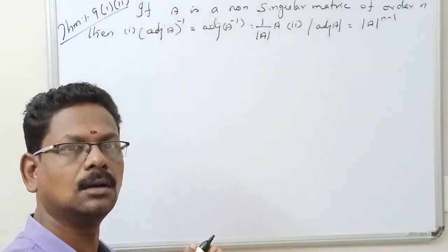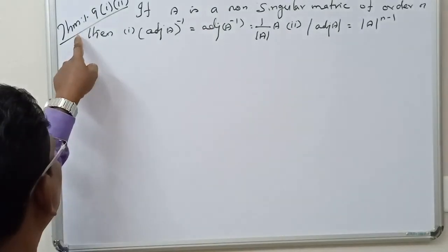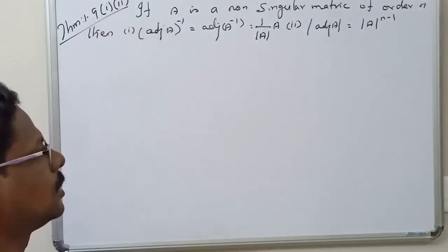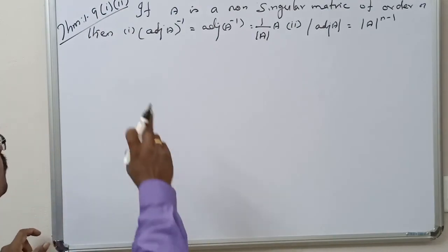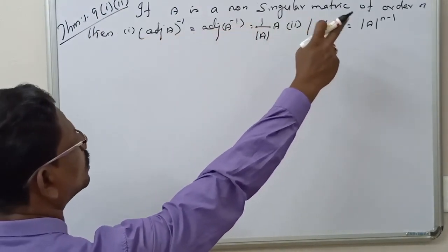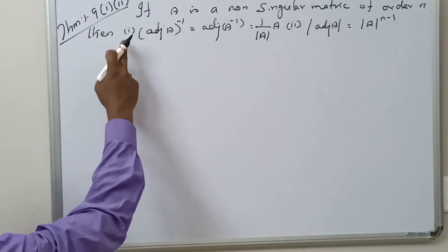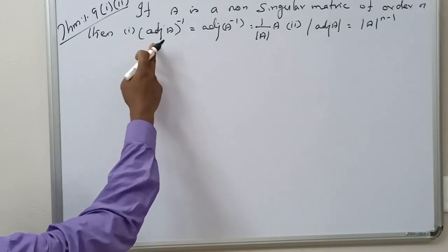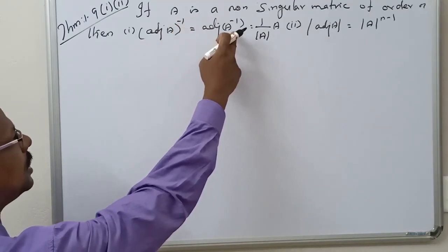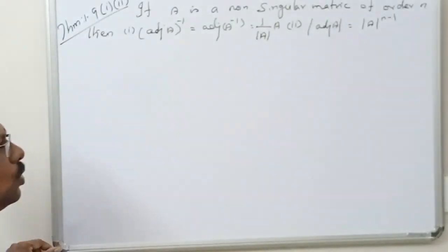Good morning. Theorem number 1.9, first part and second part. If A is a non-singular matrix of order n, then first part: the adjoint of A inverse is equal to 1 by determinant of A, into I.